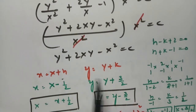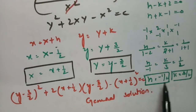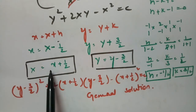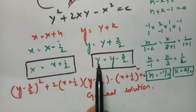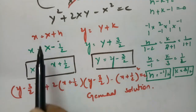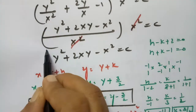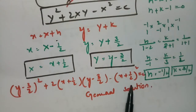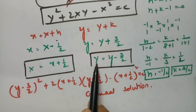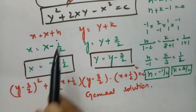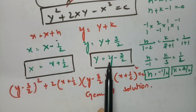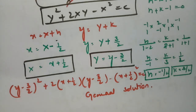After transforming to variables separable and integrating, we get the solution in capital letters. We found h = -1/2 and k = 3/2, so capital X = x + 1/2 and capital Y = y - 3/2. Substituting gives the final answer: (y - 3/2)² + 2(x + 1/2)(y - 3/2) - (x + 1/2)² = C.